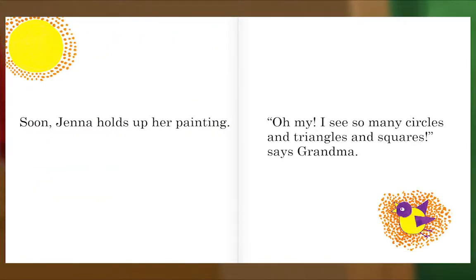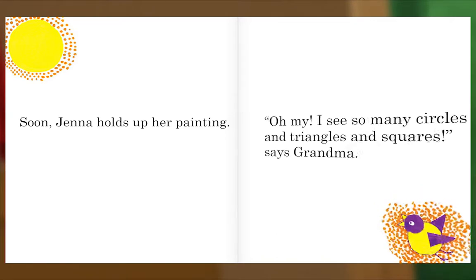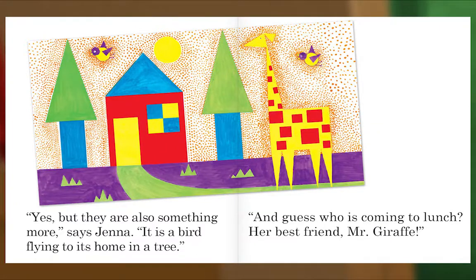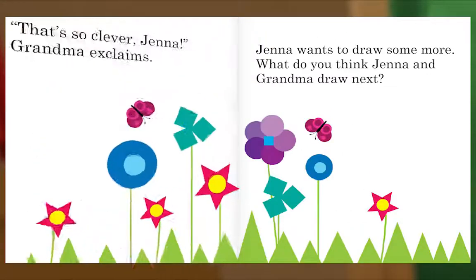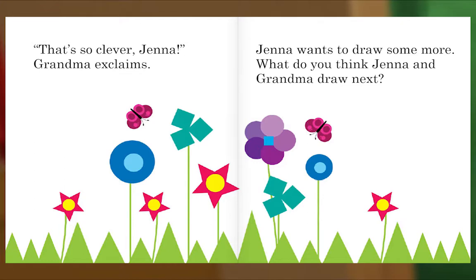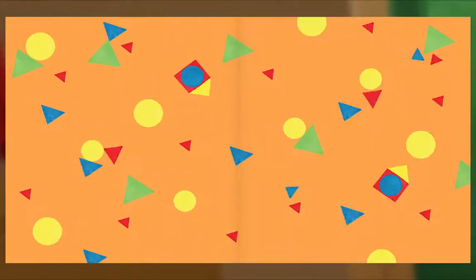Soon Jenna holds up her painting. Oh my! I see so many circles and triangles and squares, says grandma. Yes, but they are also something more, says Jenna. It is a bird flying to its home in a tree. And guess who is coming to lunch? Her best friend, Mr. Giraffe! That's so clever, Jenna, grandma exclaims. Jenna wants to draw some more. What do you think Jenna and grandma draw next? The end.